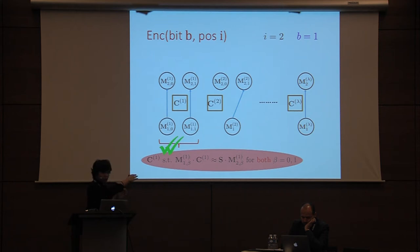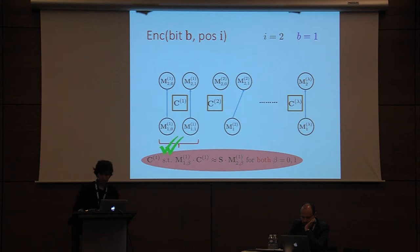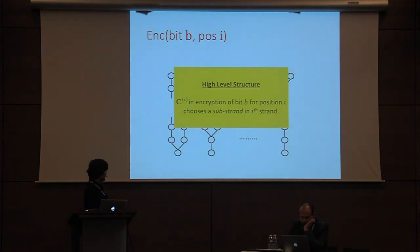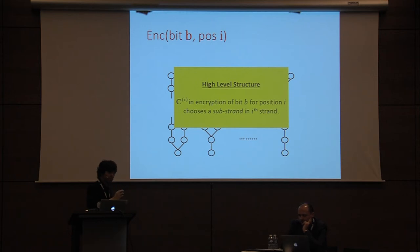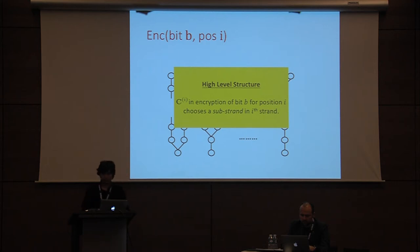This idea can be generalized for all levels and all different positions. At a high level, in encryption the i-th ciphertext C matrix performs a choice: it chooses which strand to go to depending on the bit being encrypted. If you're encrypting some bit B at position i, the i-th short matrix should basically choose which of the strands you go to. This is going to be very important in constructing the test algorithm.